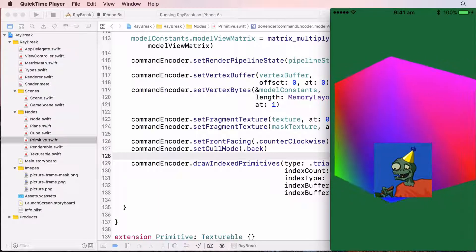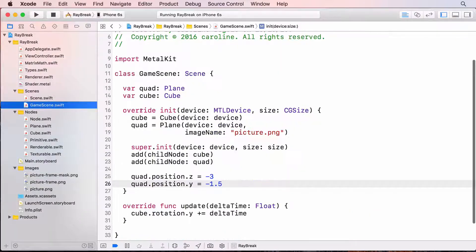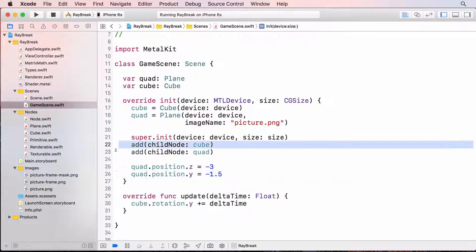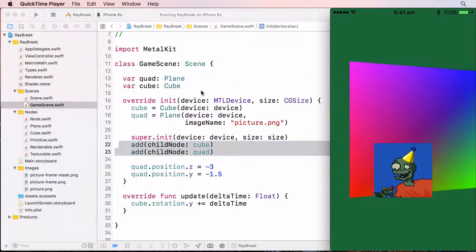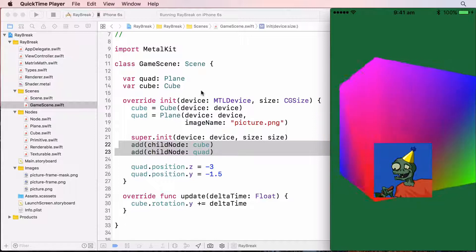This is to do with depth and the order that the triangles are rendered on the GPU. We haven't told the GPU about depth yet, and we added the quad to the scene after the cube. The quad will be rendered second, even though it should appear behind the cube. To tell the GPU about depth, we'll create a depth stencil state, and store it into the command encoder.